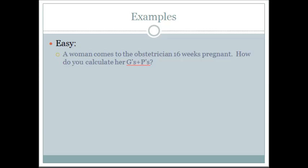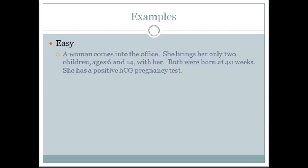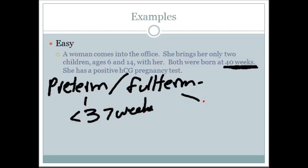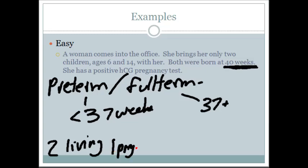This is a slightly harder example. A woman comes to your office and brings her only two children, ages 6 and 14. Both were born at 40 weeks. A preterm pregnancy is less than 37 weeks, while a full term pregnancy is 37 or more weeks. She has two living children, and she has a positive HCG pregnancy test, meaning she is currently pregnant.